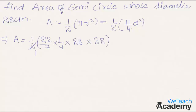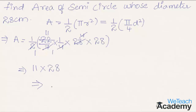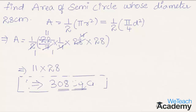Now let us simplify. Here 22 divided by 2 gives 11. And since 7 × 4 = 28, we cancel 4 in the denominator with the factor of 4 from 28, leaving us with 11 × 28. So we get the area equal to 308 square centimeters.